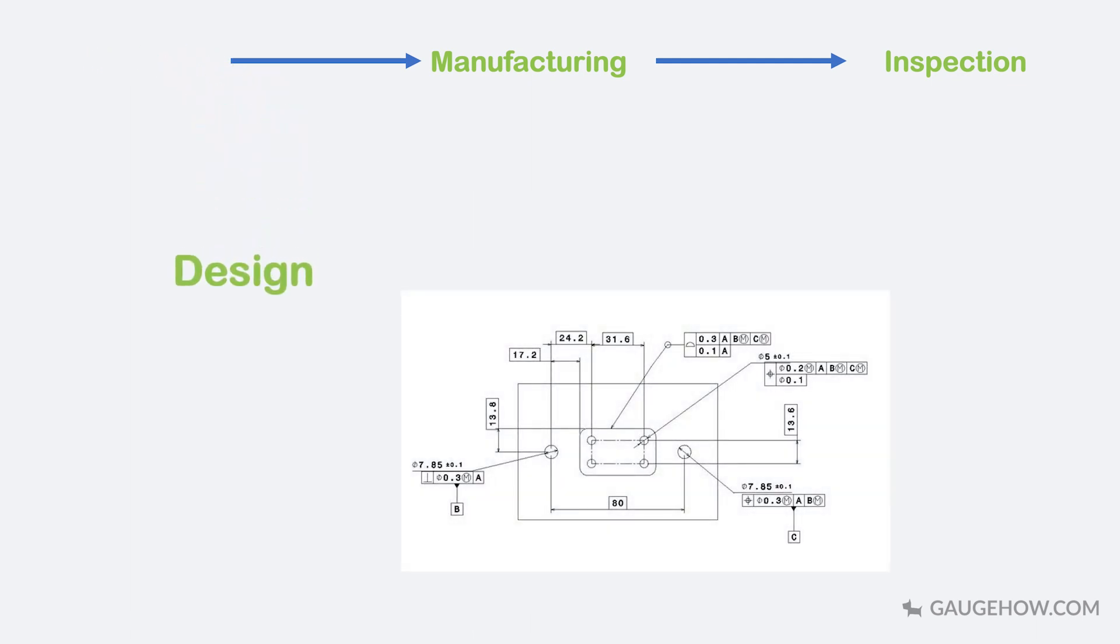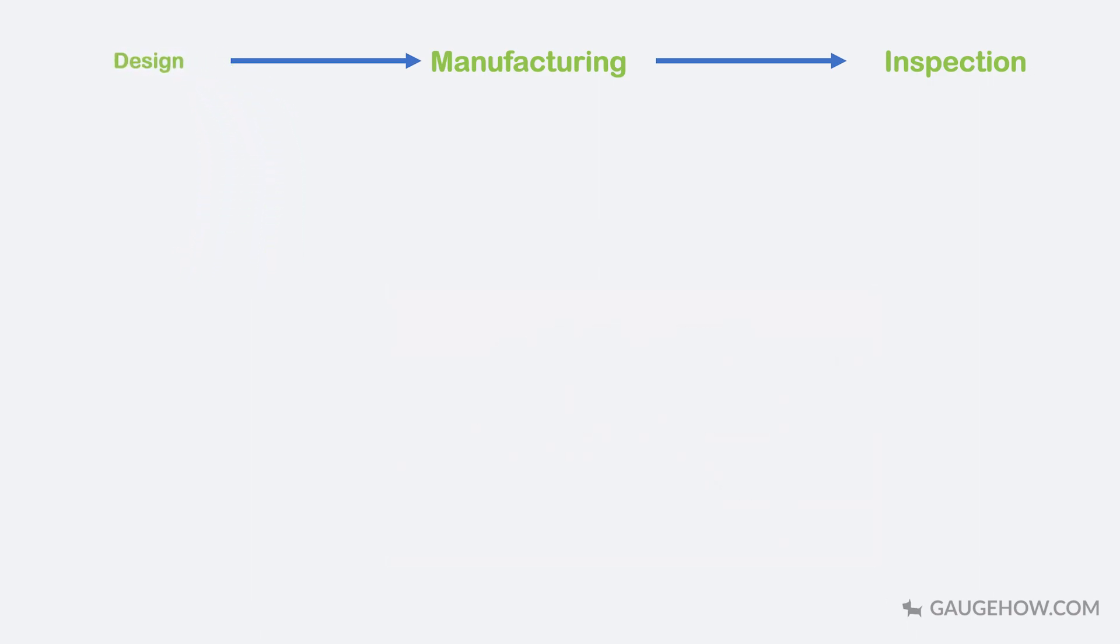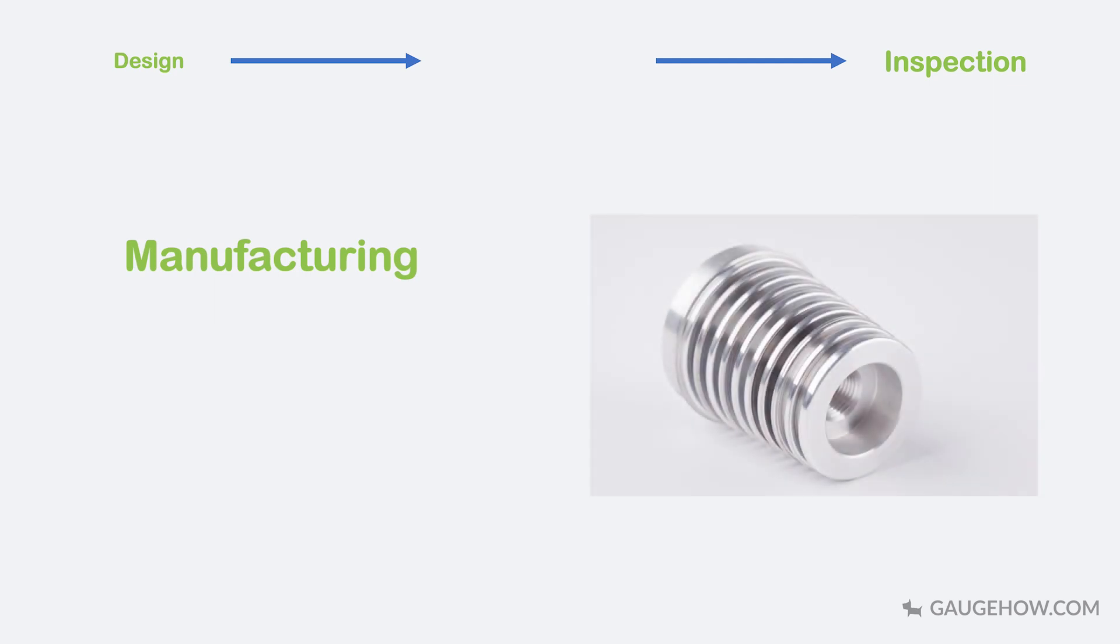In engineering, dimension measurement deals in design, manufacturing and inspection. In design, there is an ideal form of the product with a specification. This specification is used to design the product called the workpiece and the workpiece is a real form of the product.